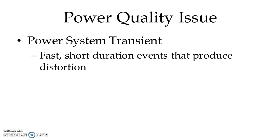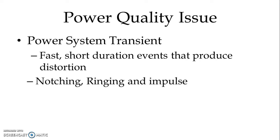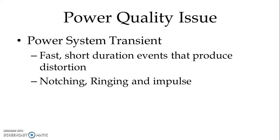Power system transient is a very fast but short duration event that produces distortion, which can be in terms of notching, ringing, and impulse. The mechanism by which transient energy is propagated in power lines and transferred to other electrical circuits is an important consideration.